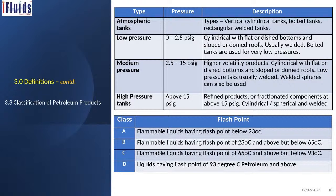High pressure tanks operate above 15 PSIG and are used for refined products or fractionated components that are more volatile. They are normally cylindrical or spherical and welded. Products stored in these tanks are classified into four categories based on flash point: Class A — below 23°C (highly volatile), Class B — 23°C and above but below 65°C, Class C — 65°C and above but below 93°C, and Class D — flash point of 93°C and above.